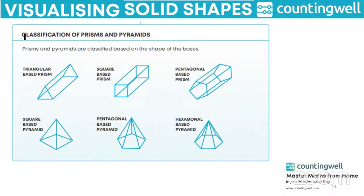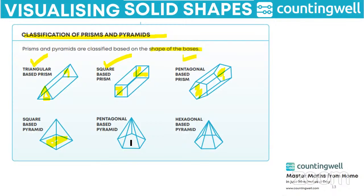Now let us see the classification of prisms and pyramids. Based on the shape of their bases, we classify them as triangular-based prism, square-based prism, and pentagonal-based prism. For pyramids, the base can be a square — giving a square-based pyramid — or a pentagon giving a pentagonal-based pyramid, or a hexagon giving a hexagonal-based pyramid.